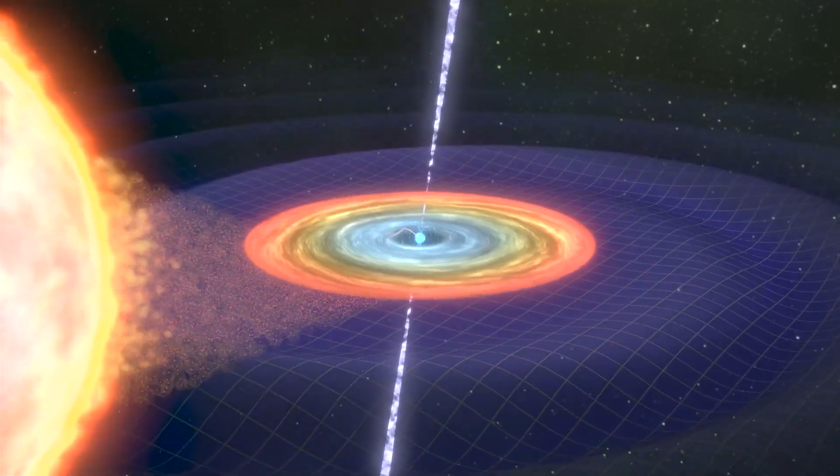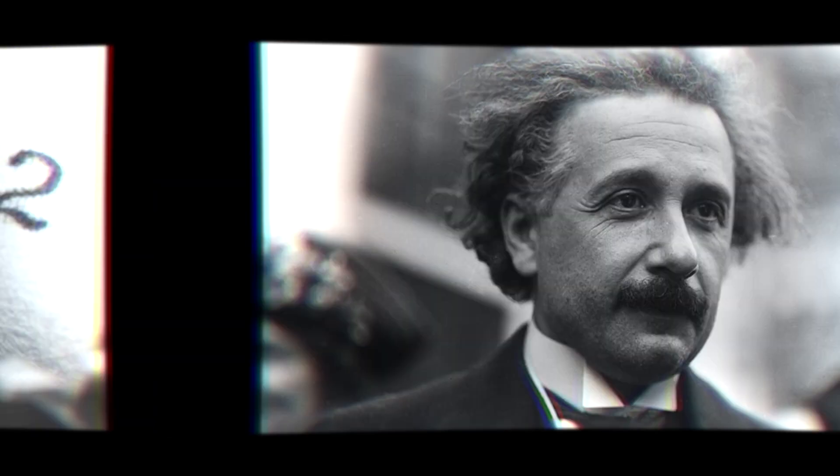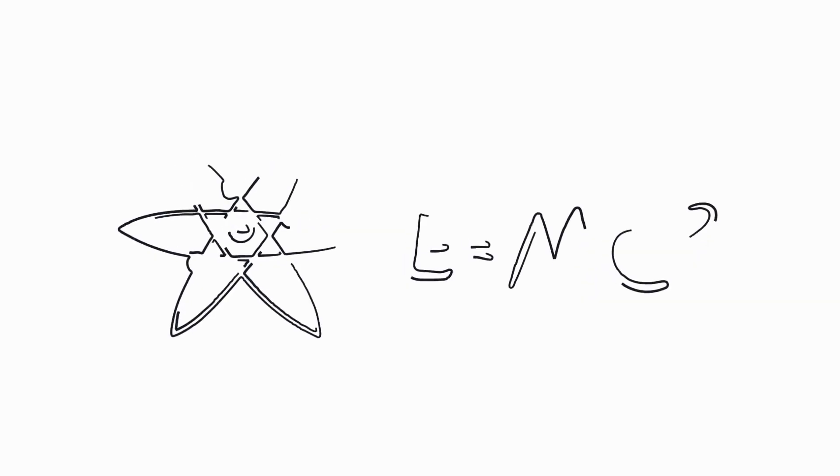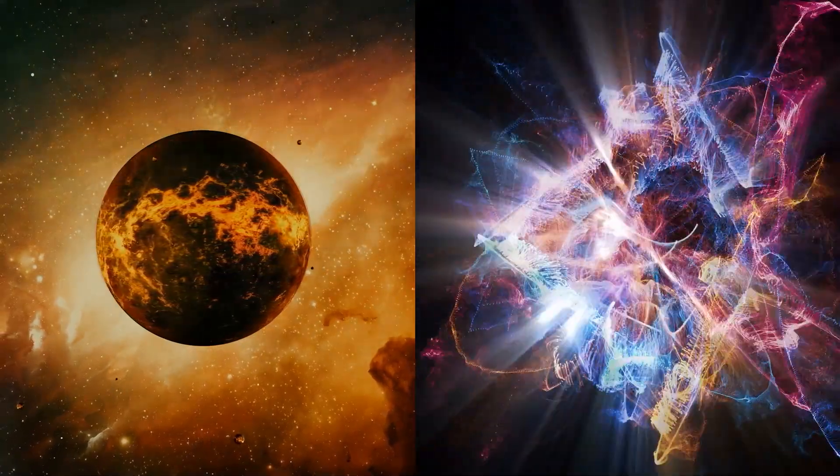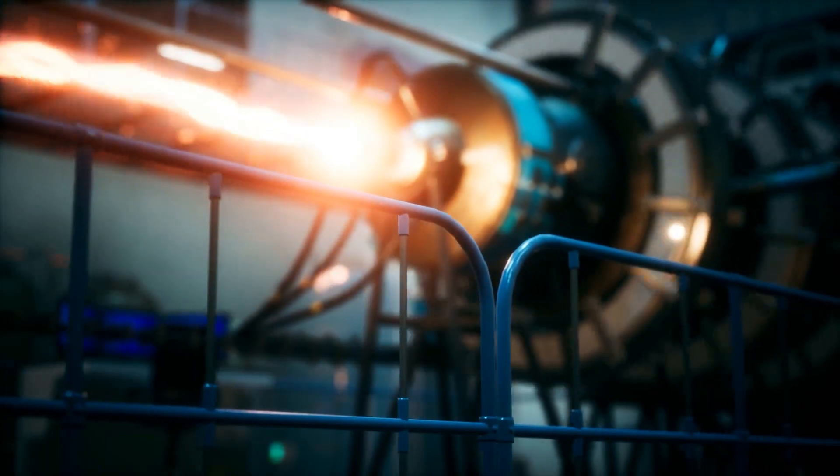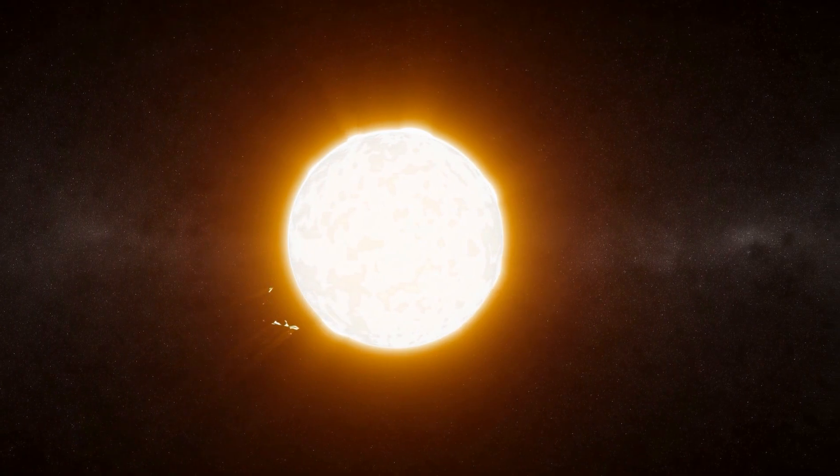Einstein's famous equation, E equals mc squared, makes it simpler for us to understand. This simple yet profound equation tells us that mass and energy are interchangeable. It means a tiny bit of mass can unleash tremendous energy. This principle not only powers the sun, but also explains the immense power of nuclear weapons.